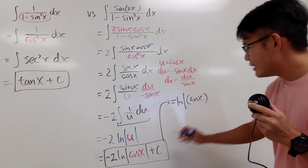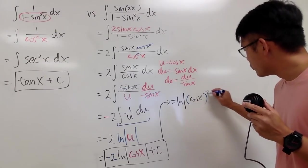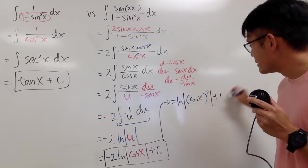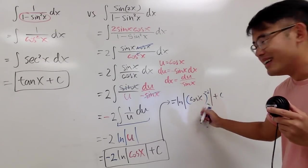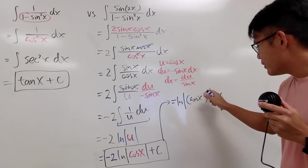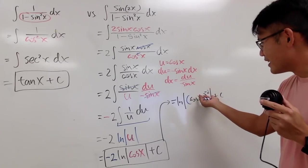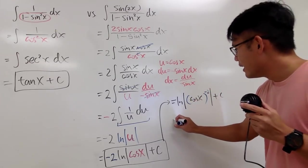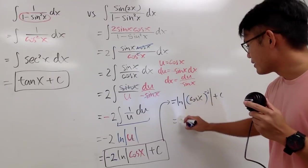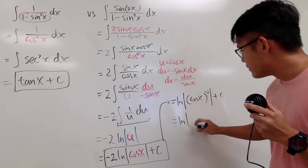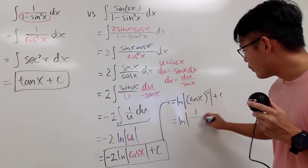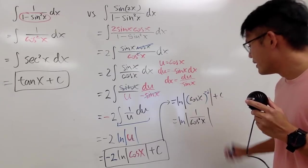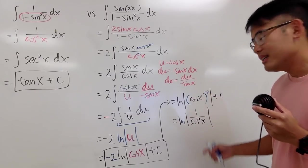And raise this to the negative 2 power. This negative 2 power tells us to bring cosine x down to the denominator and square it. So this is natural log of the absolute value of 1 over cosine squared x.